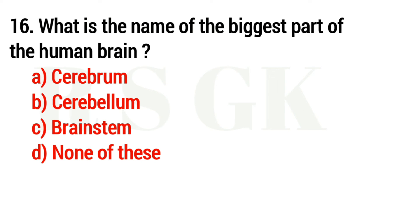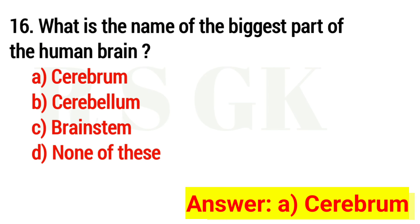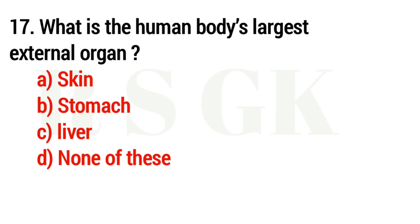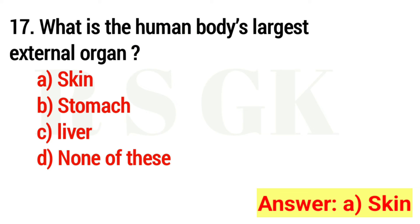Question 16. What is the name of the biggest part of the human brain? The answer is Option A: Cerebrum. Question 17. What is the human body's largest external organ? The answer is Option A: Skin.